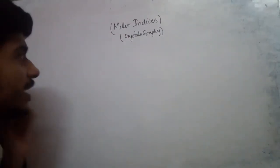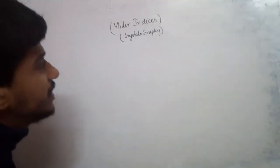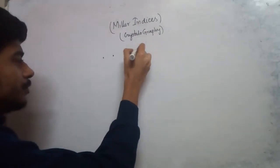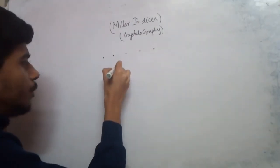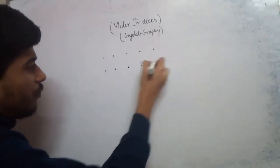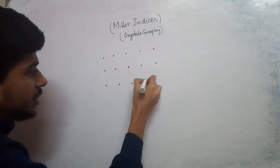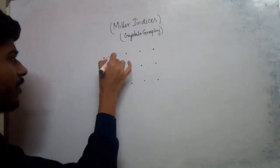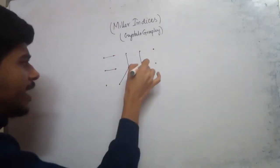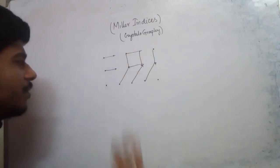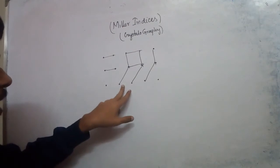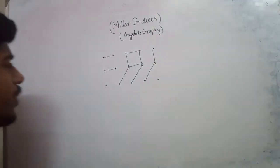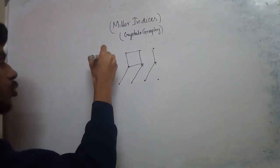Today we shall discuss Miller indices and their importance in crystallography. First, we consider lattice points — an array of points in space which complete the crystal structure. Any crystal can be made up of an infinite number of parallel, equidistant planes oriented in any direction. The crystal structure made up of such parallel equidistant planes passing through lattice points is called a lattice plane.